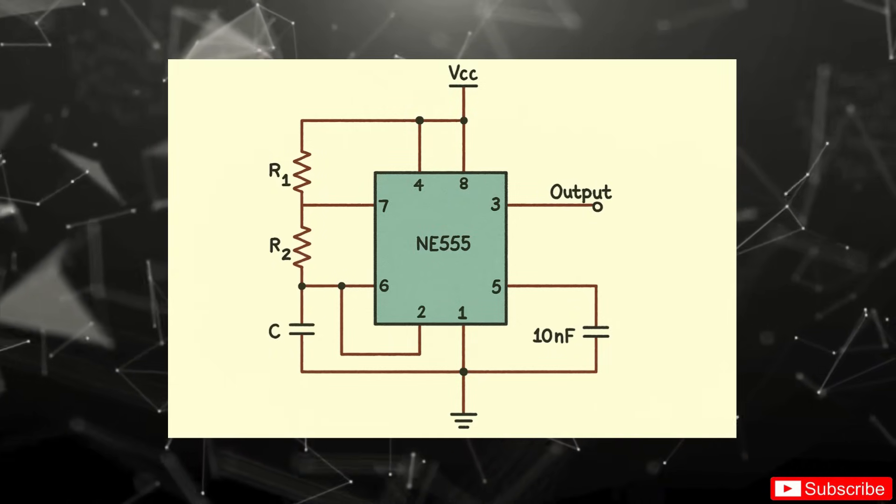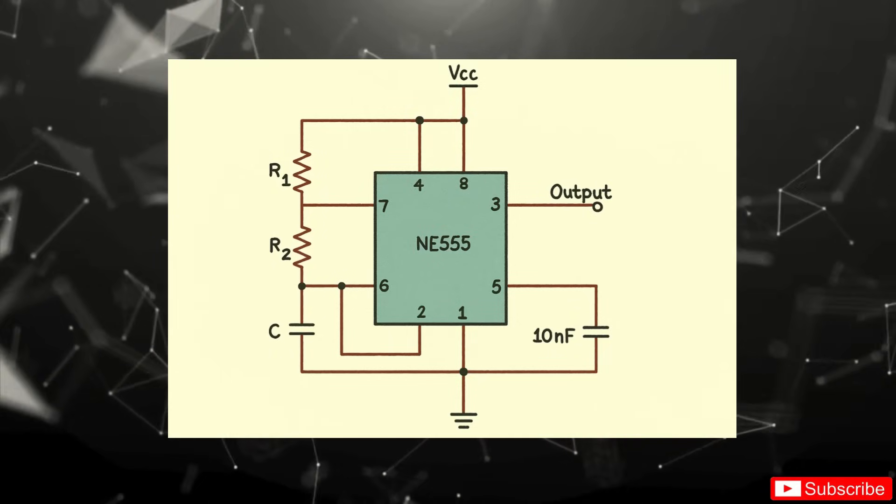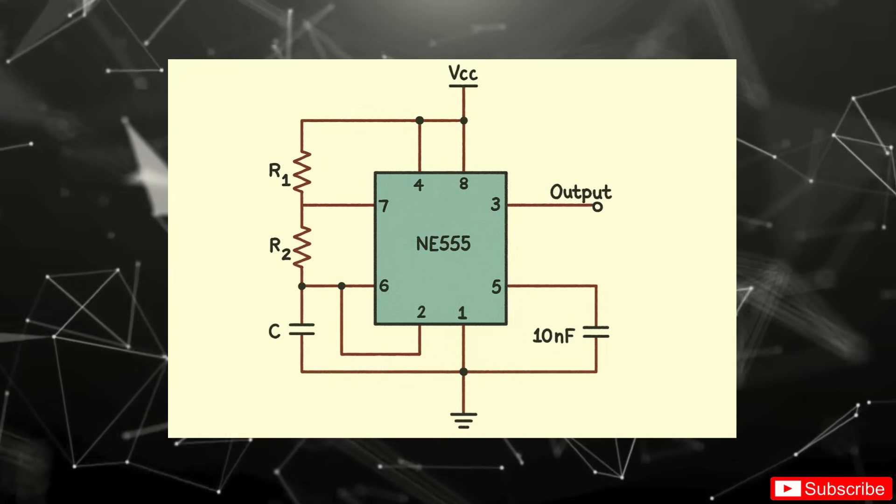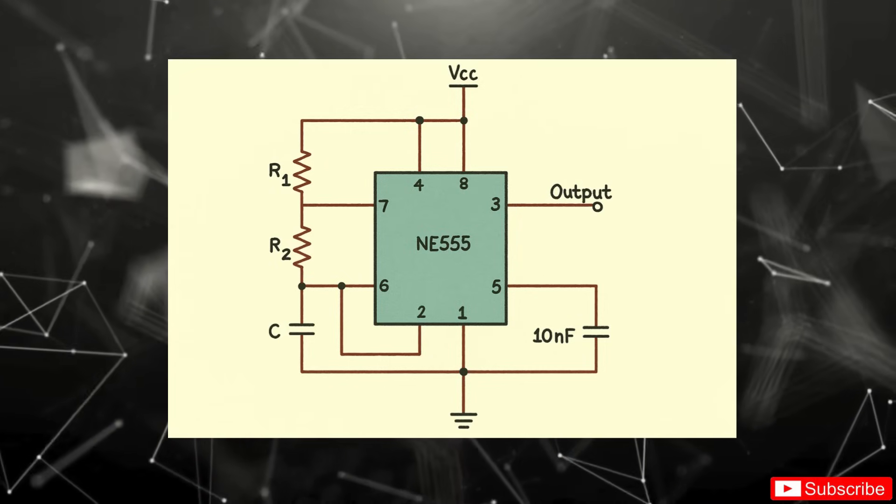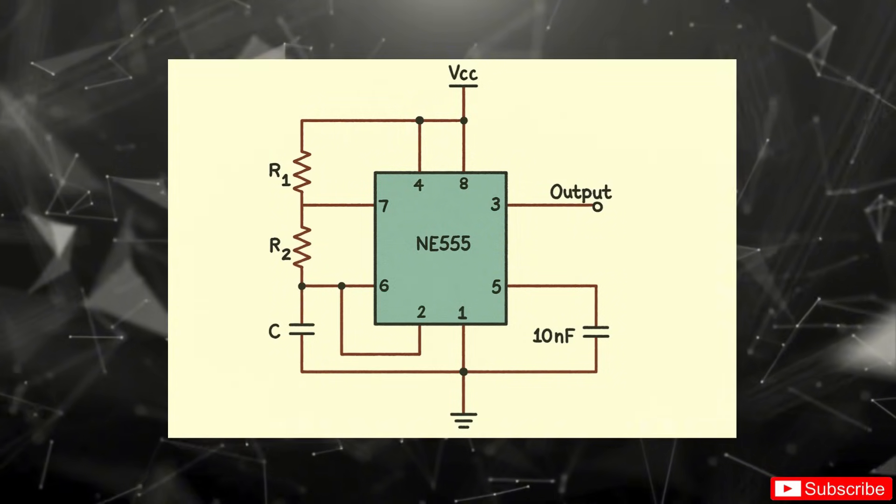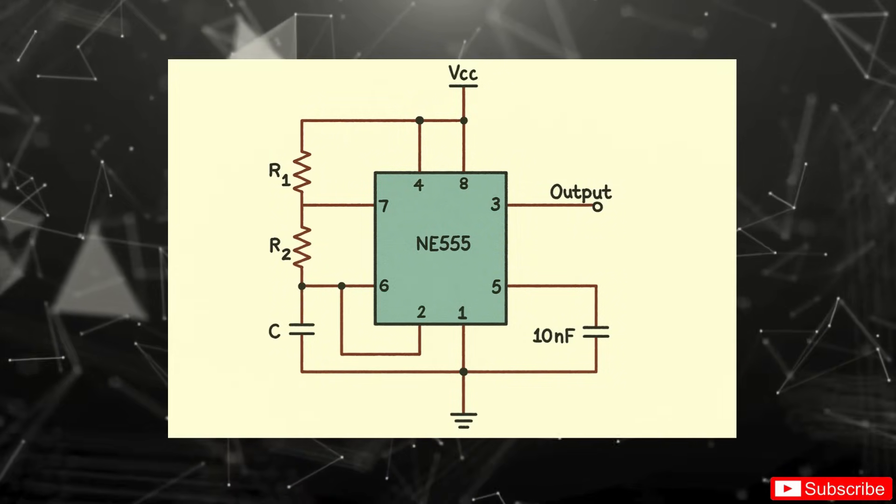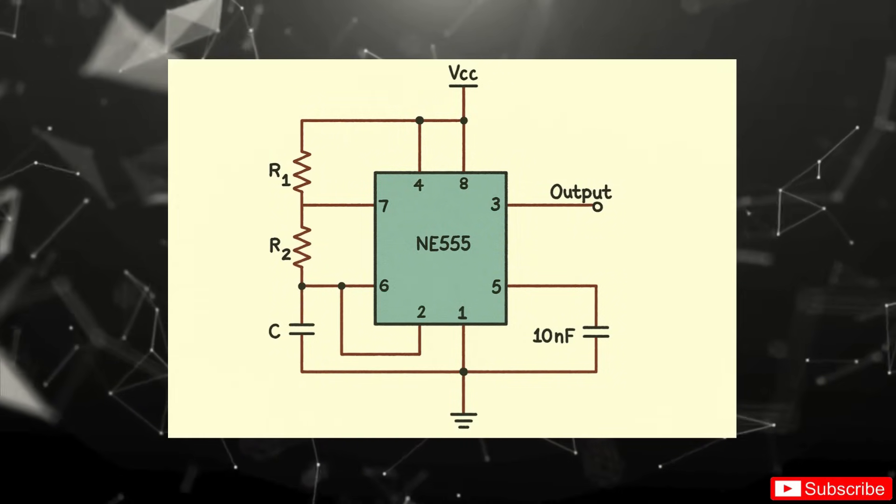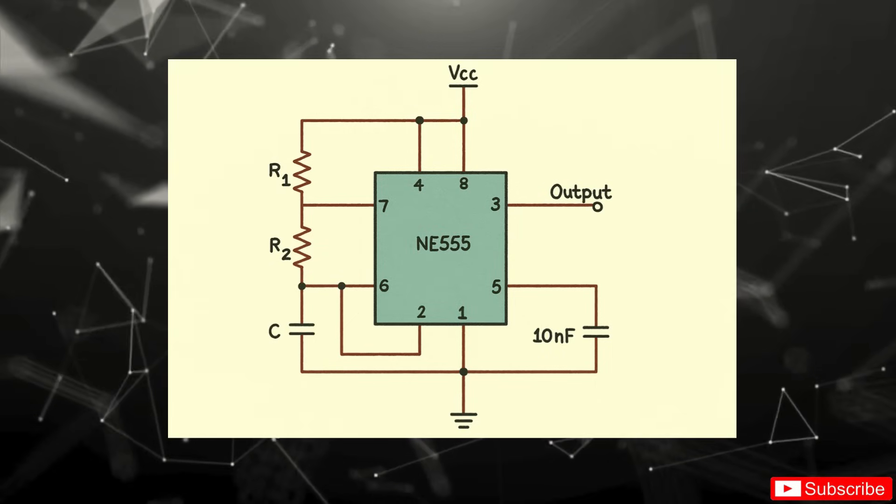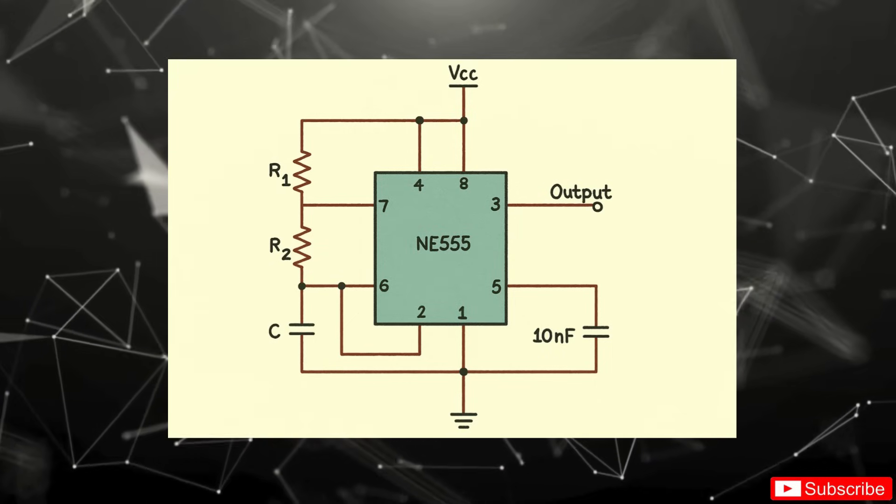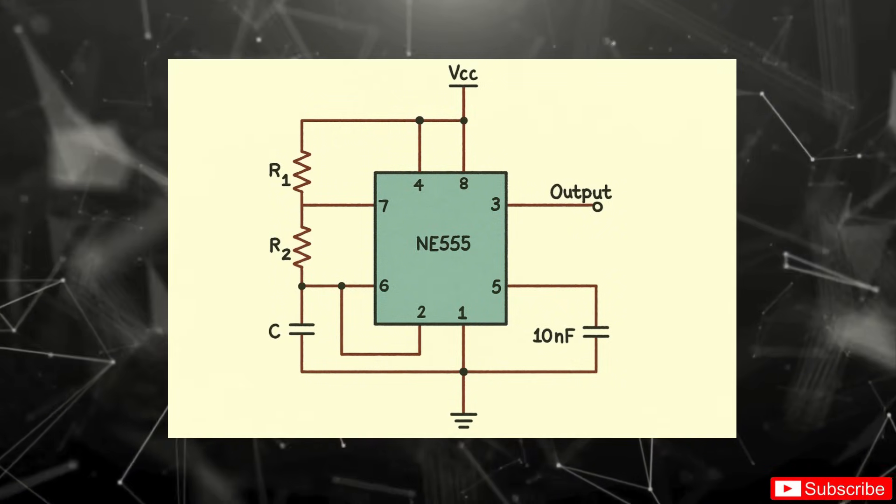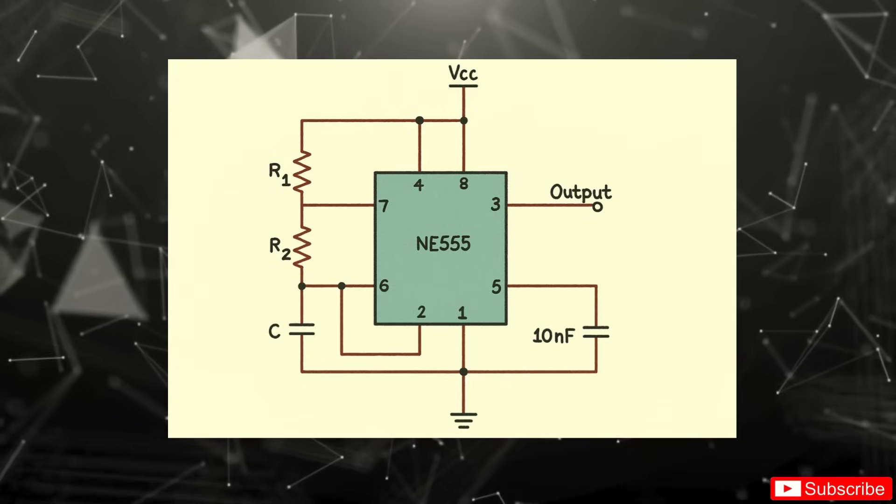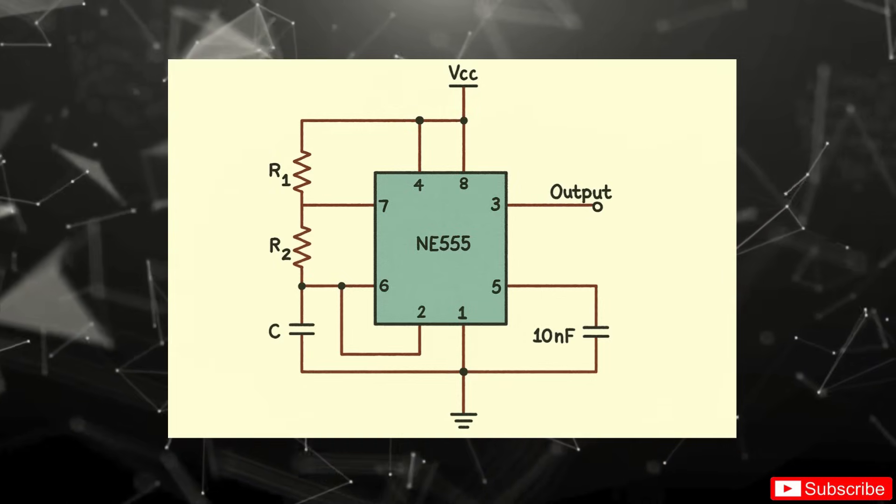Let's break down the actual circuit. The timing network consists of three parts. R1 goes from VCC to the discharge pin, which is pin 7. R2 connects from the discharge pin to the threshold and trigger pins, which are pins 6 and 2. And C1 connects from that junction to ground. Here's where the magic happens. C1 charges through both R1 and R2, but discharges only through R2. This creates an asymmetrical square wave with a longer high time and a slightly shorter low time, which is perfect for reliably clocking logic chips like the CD4017.